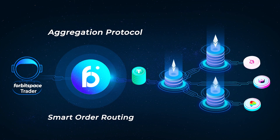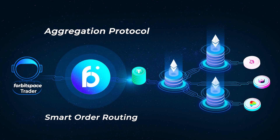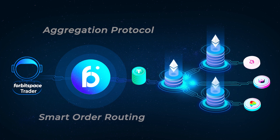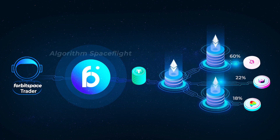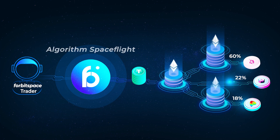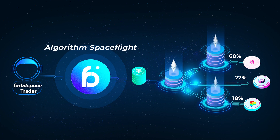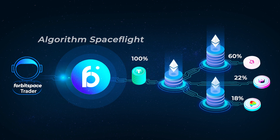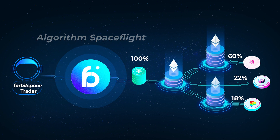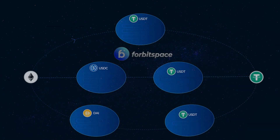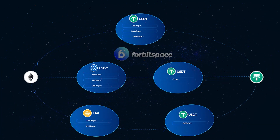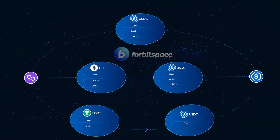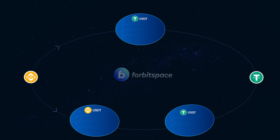4BitSpace uses a smart order routing algorithm that splits a single transaction into multiple orders across various DEXs, routing orders to allow crypto traders to tap deep liquidity and receive better pricing at low cost. 4BitSpace's aggregator sources liquidity from different DEXs, offering users better token swap rates than they could get on any single DEX.